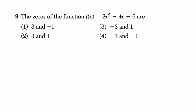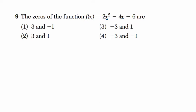Let's talk about what this problem is asking. It's asking for the zeros — they want to know what the zeros of this function are. So f of x is just the way of saying a function based on x. You can see they're using the variable in the function. This is a parabola — a quadratic equation. I can tell because the exponent is 2; once you see that, you know you've got a parabola.